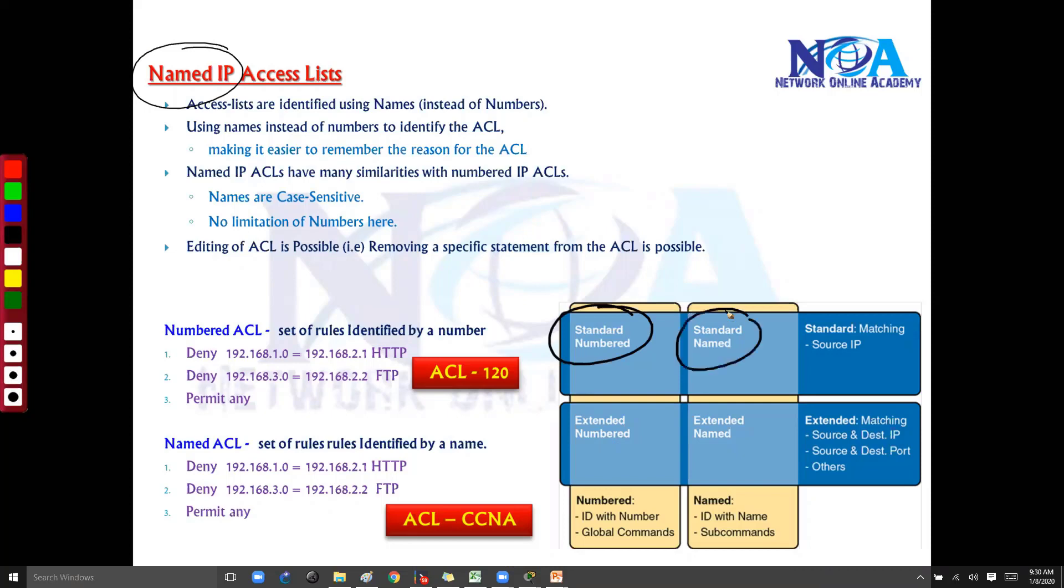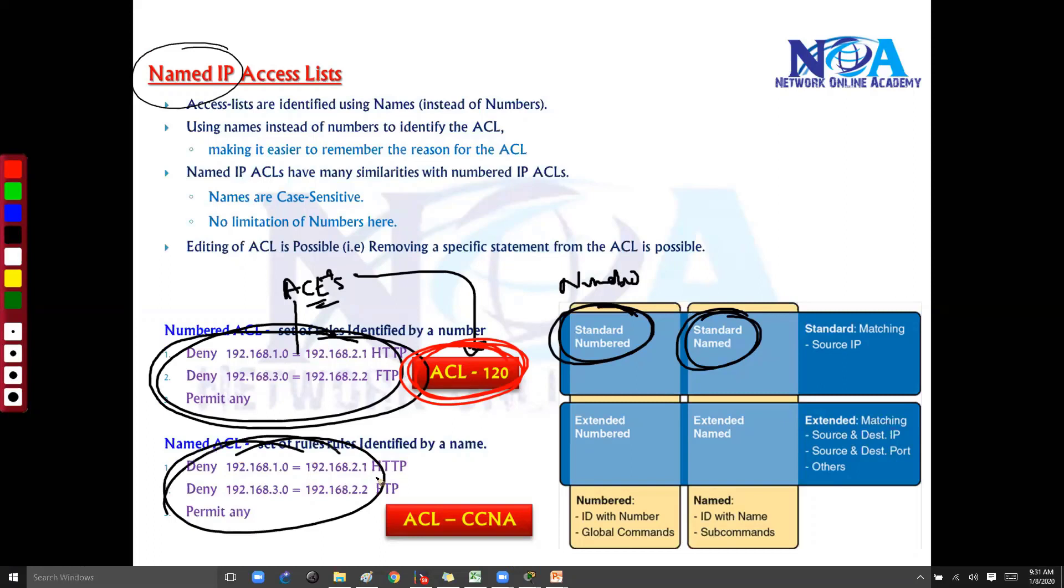Of course, in named ACL also we have standard and extended. Now the difference, as we discussed initially, if you are writing the rules or the ACEs, access control entries, grouped together and identified with some number, we call it a numbered ACL. Or the same rules we can group together and identify them with a name, and we call them as named ACLs.